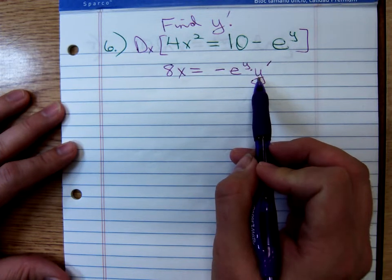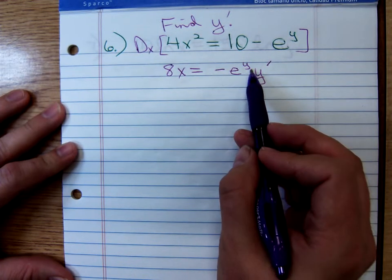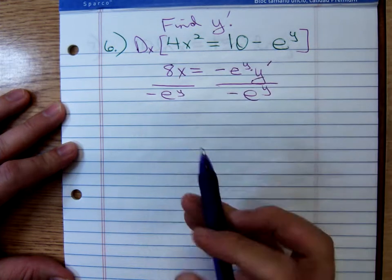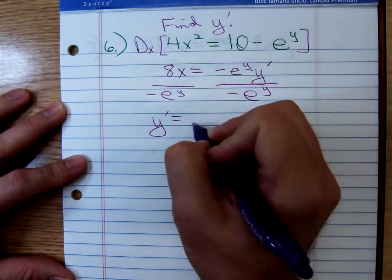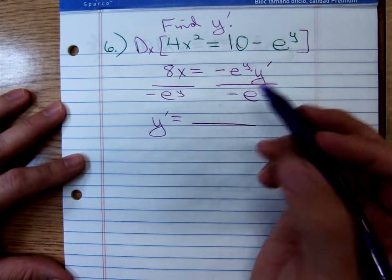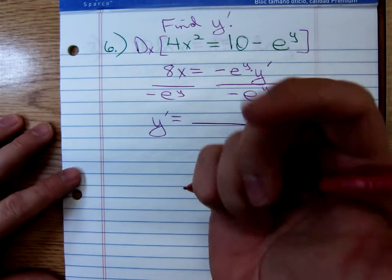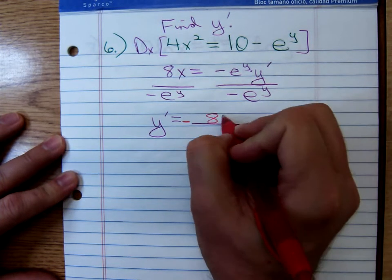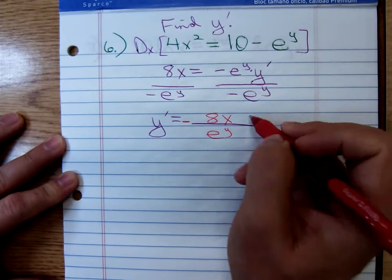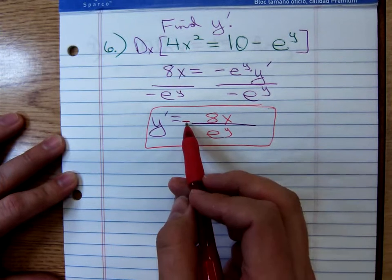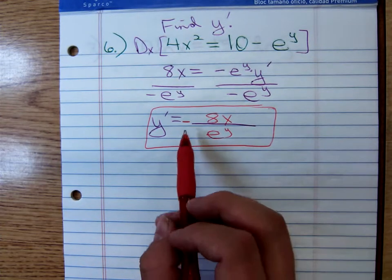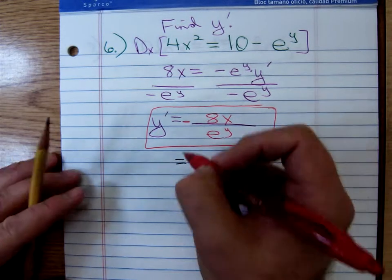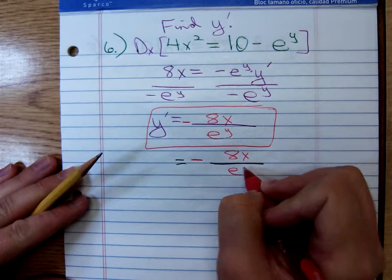We're trying to solve for y prime, so what do we need to do? To undo that multiplication, we'll divide both sides by negative e to the y. I'm having an aversion to leaving it in this form, so I don't like that negative in the denominator. Positive divided by negative, I now have a, I can put the negative in front of the fraction, that's what I'll do. So I have the negative in front of the fraction, I have an 8x on top, and an e to the y on bottom.